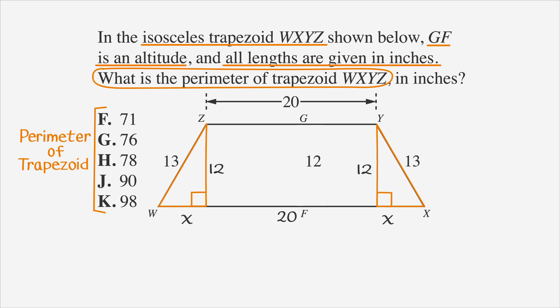Because the altitude forms a right triangle with the base, we can set up two triangles, one on either side of the trapezoid, as shown.